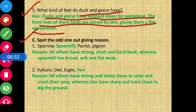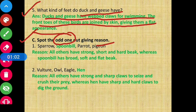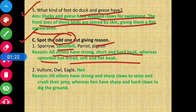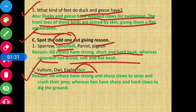Section C: Spot the odd one out. Question 1: Sparrow, spoonbill, parrot, and pigeon — the odd one out is spoonbill, because all others have a strong, short, and hard beak, whereas spoonbill has a broad, soft, and flat beak. Question 2: Vulture, owl, eagle, and hen — hen is the odd one out because all others have strong and sharp claws to seize and crush their prey, whereas hen has sharp and hard claws to dig the ground.